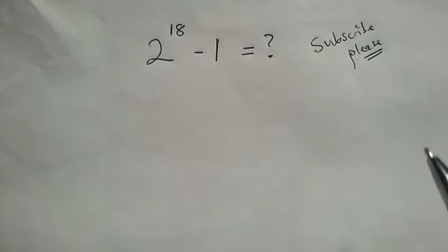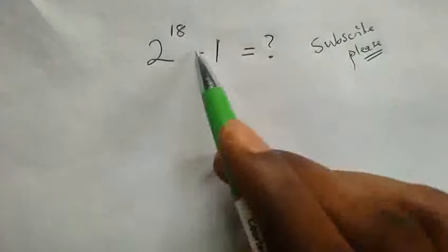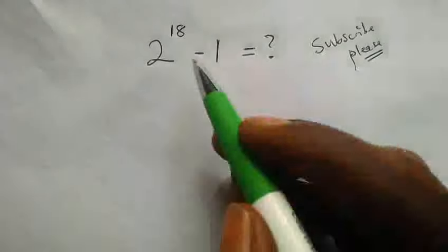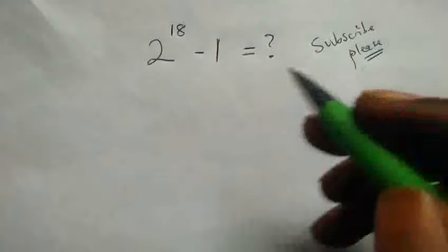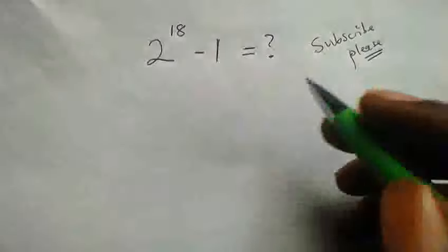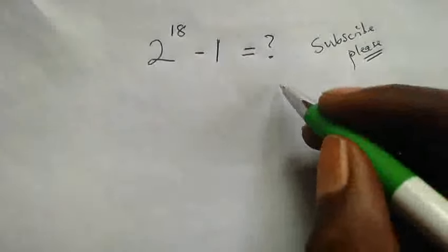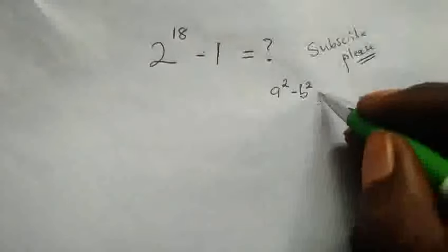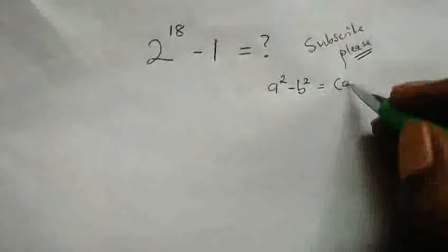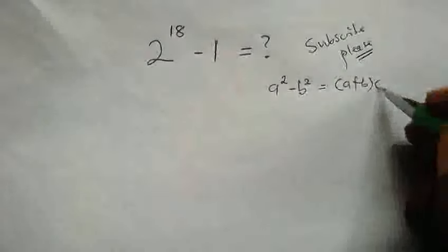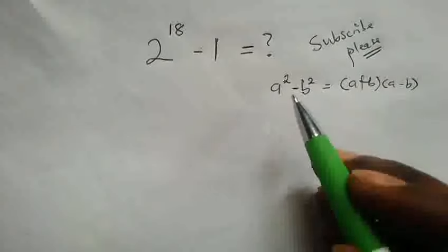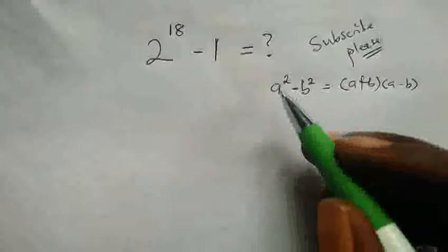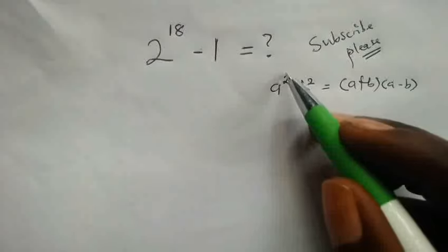Now let us see how to evaluate this without calculators. The first thing that comes into my mind is this negative sign here. With that I am recalling the difference of two squares formula: a squared minus b squared equals a plus b multiplied by a minus b.